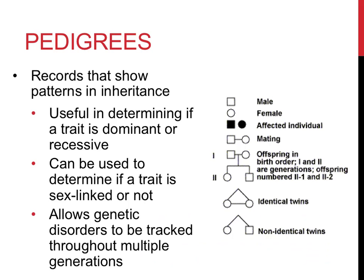Pedigrees are incredibly useful genetics tools. Using pedigrees, you can often determine if a trait is dominant or if it's recessive, if it's located on a sex chromosome, and how likely it might be to pass on a given trait to offspring. In addition, you can apply knowledge of Punnett squares and probability to real-world scenarios.